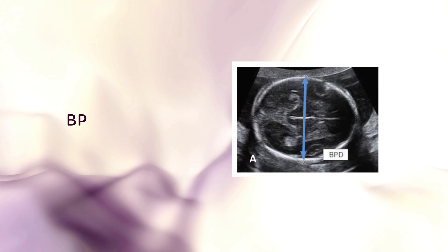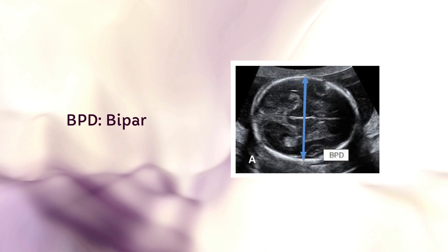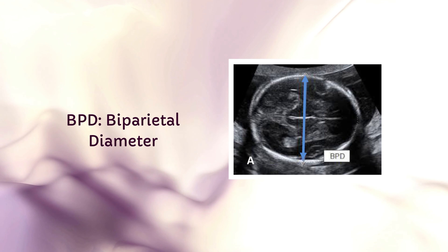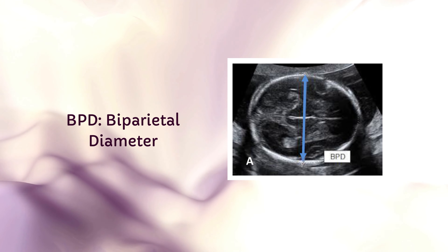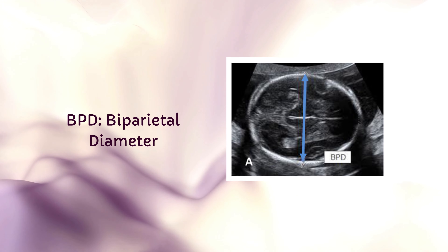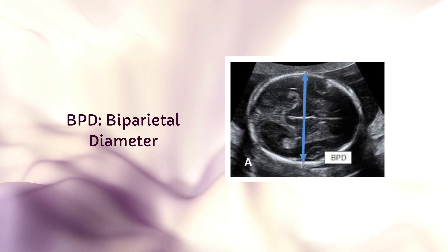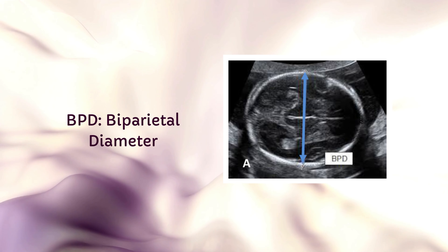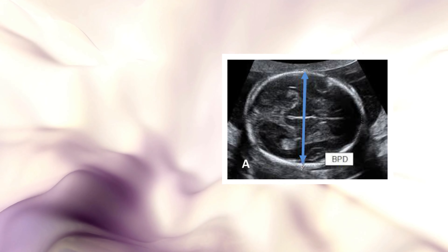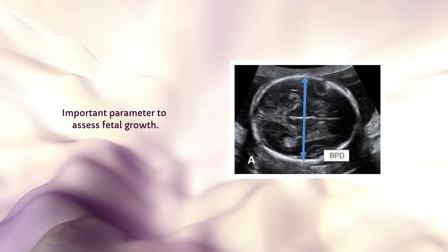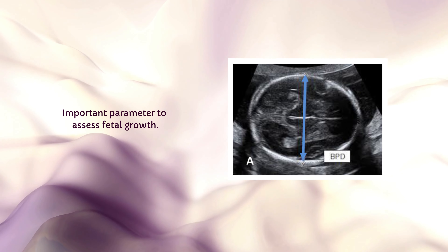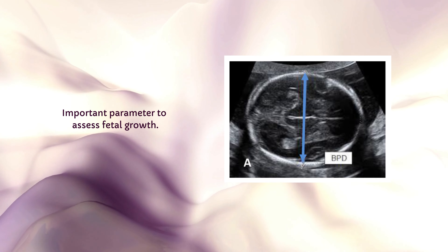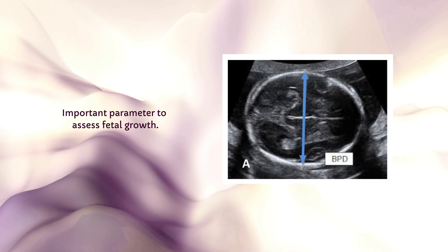BPD, biparietal diameter. It's a fancy term for measuring your baby's head — precisely the distance between the sides of their head. BPD measurement helps estimate your baby's expected delivery date in the early second trimester. It can also be used to estimate the fetal weight.